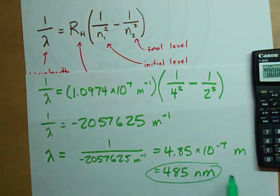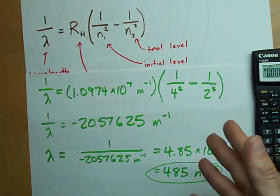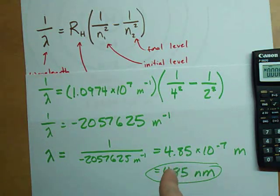485 is a visible wavelength. I don't exactly know what color it is. Maybe it's red. It's probably red. Something like that.